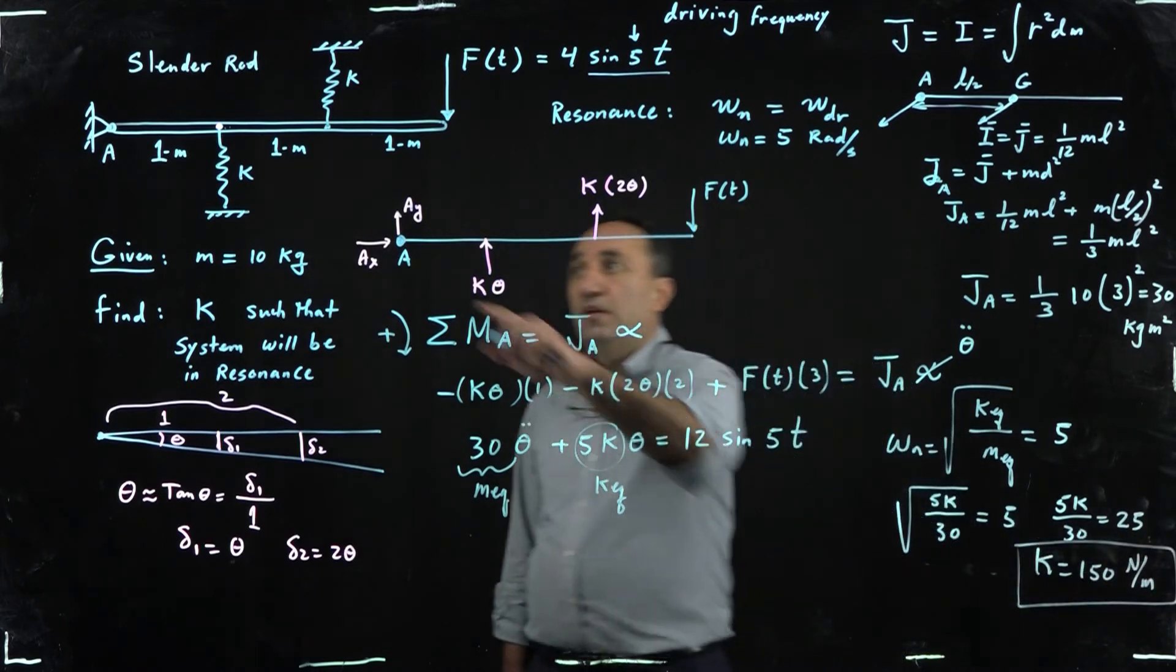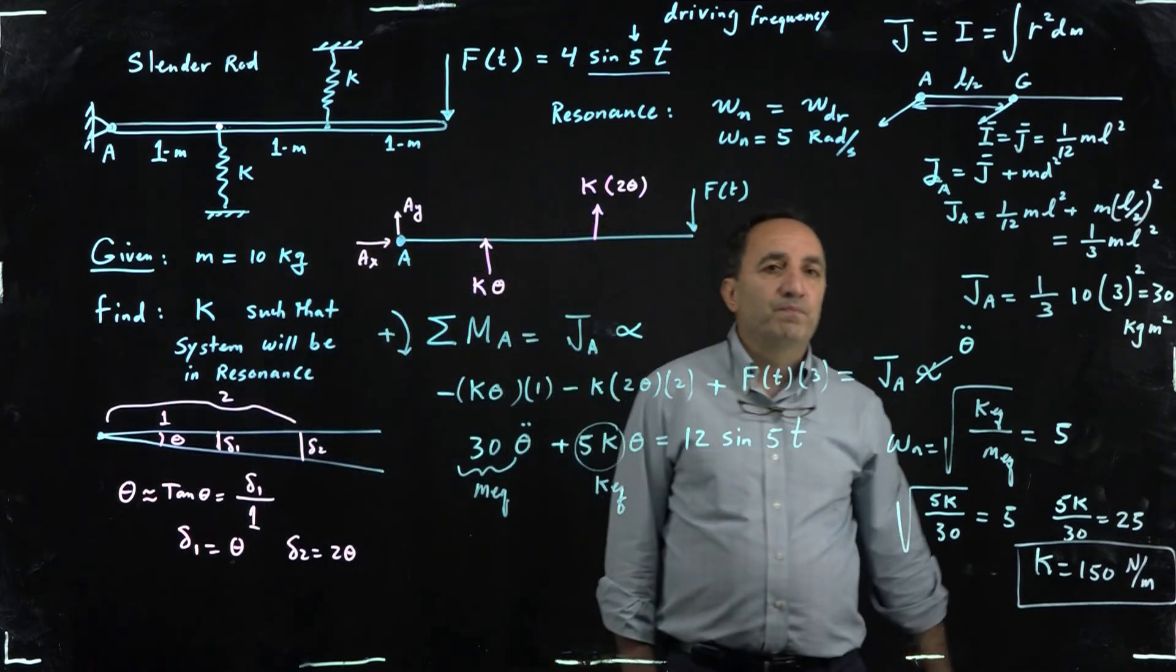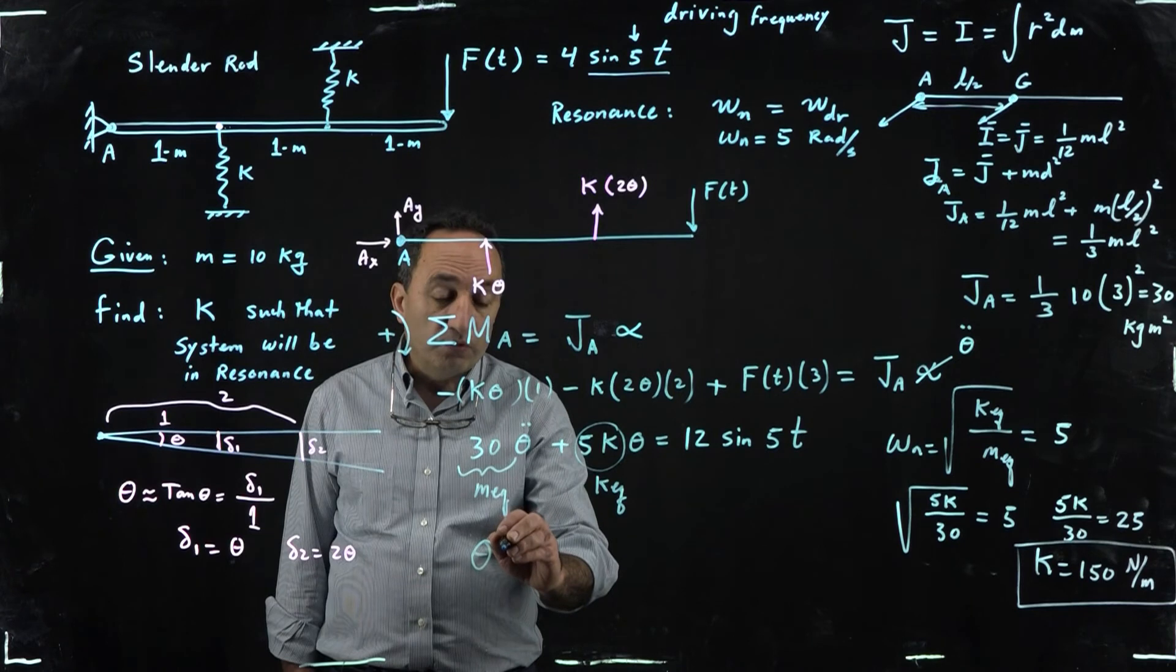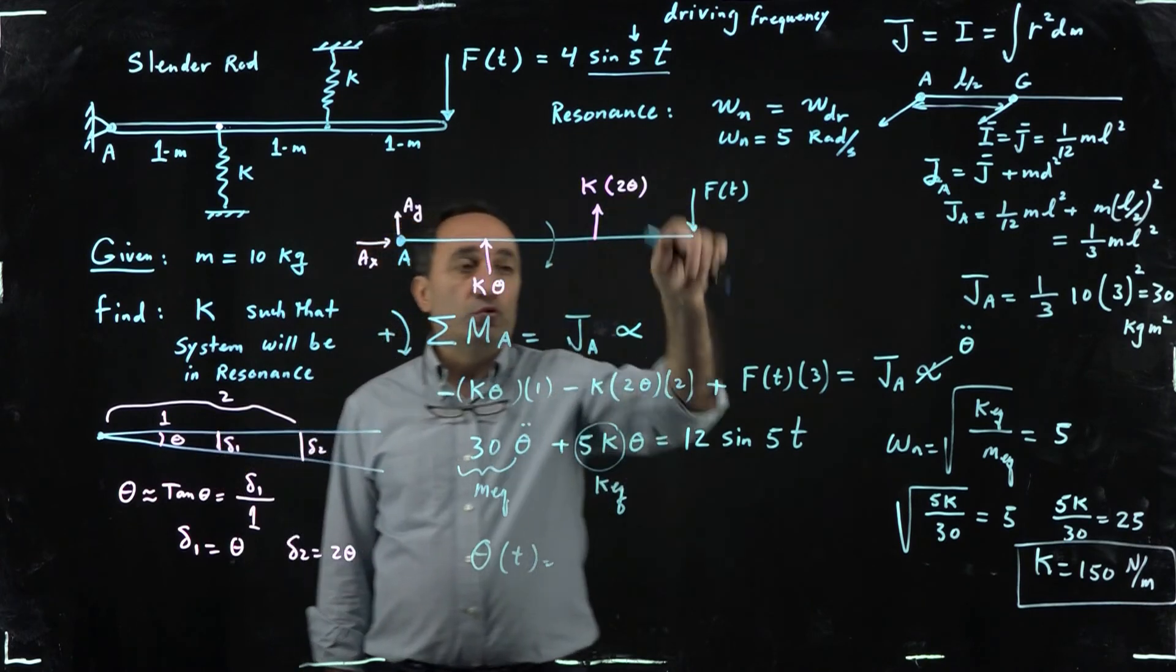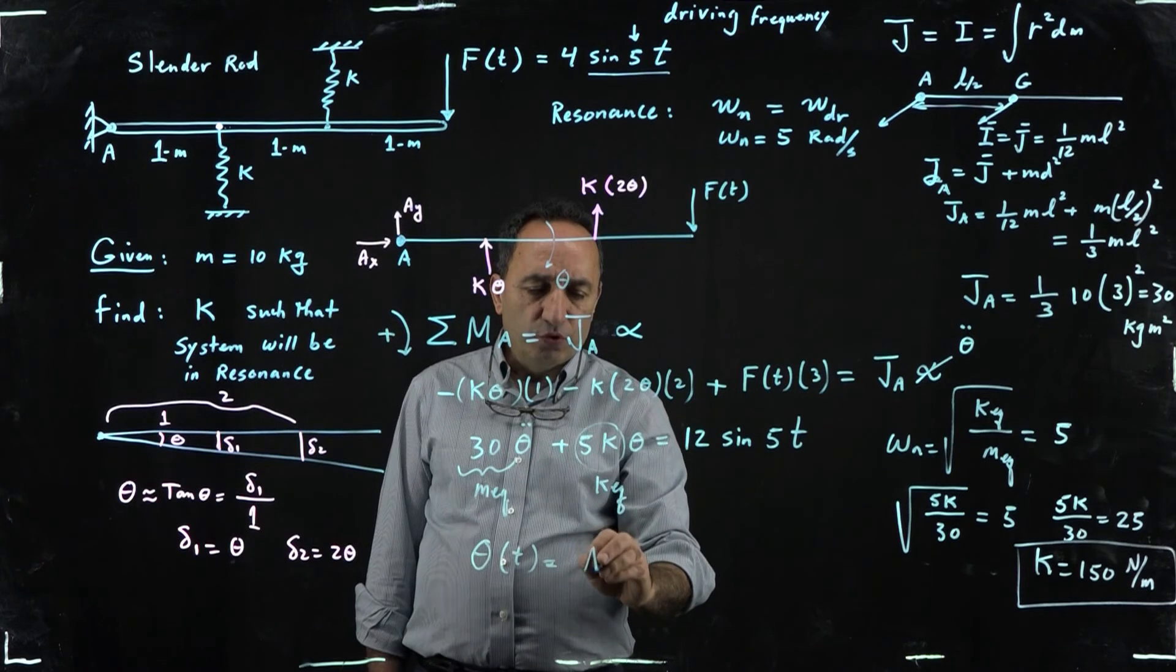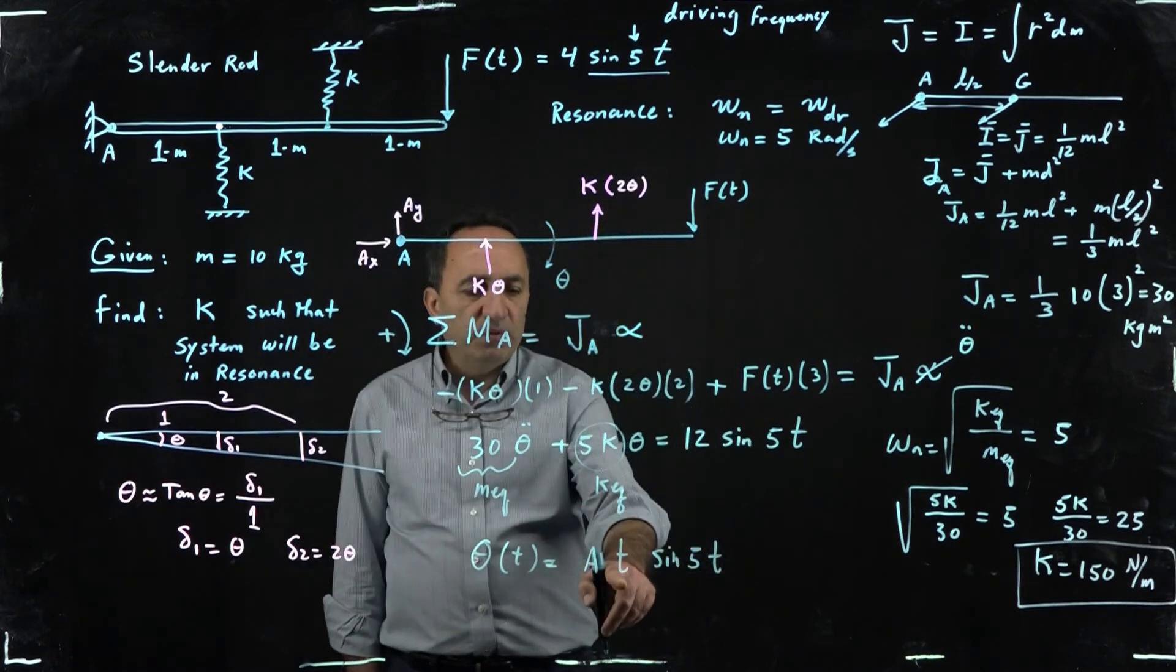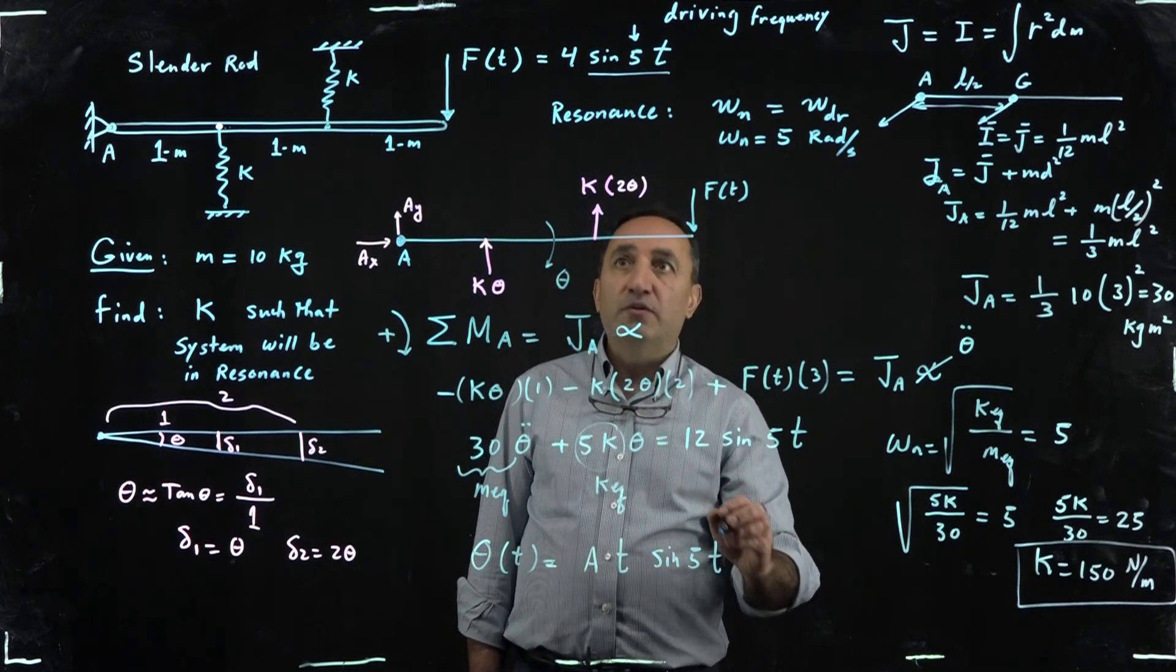So if the stiffness here and here are 150 Newton per meter, this system will be at resonance. And remember, resonance is dangerous. The solution to this, which I will probably show you another video, theta as a function of time, meaning this angle due to the disturbance as a function of time, would be probably some amplitude times t times sine of the frequency, sine or cosine could be sine or cosine.